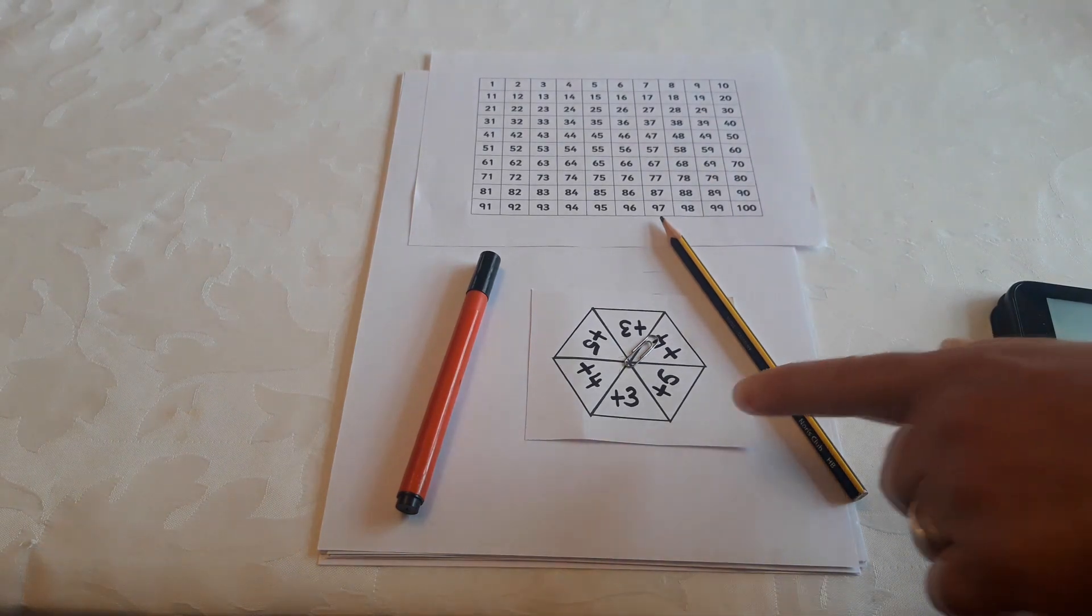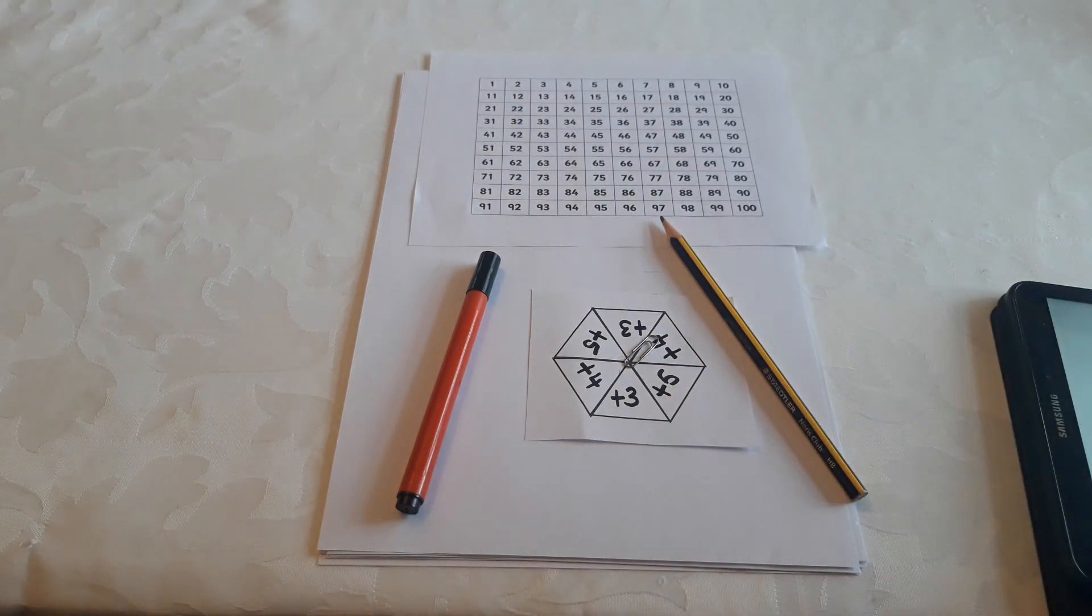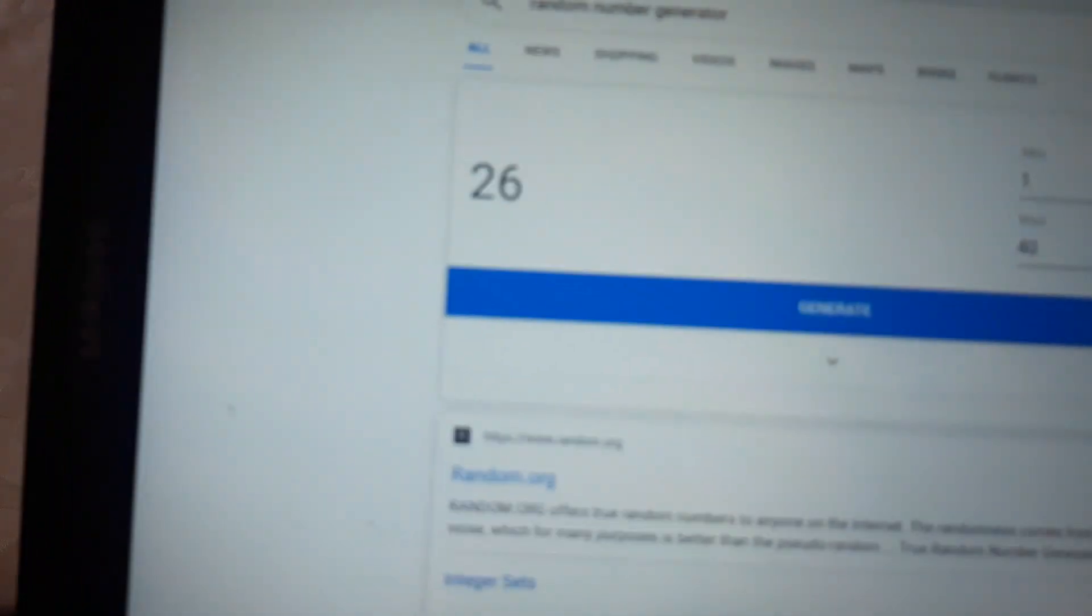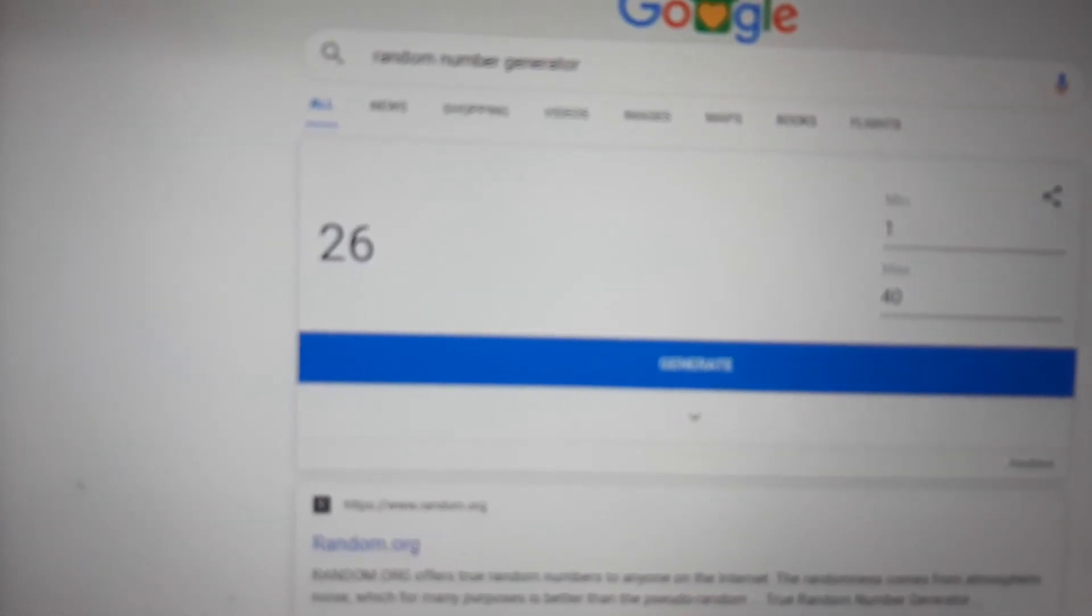You need a spinner like this one here with a paper clip and a pencil. You also need a random number generator like this one. If you type random number generator into Google, this comes up.